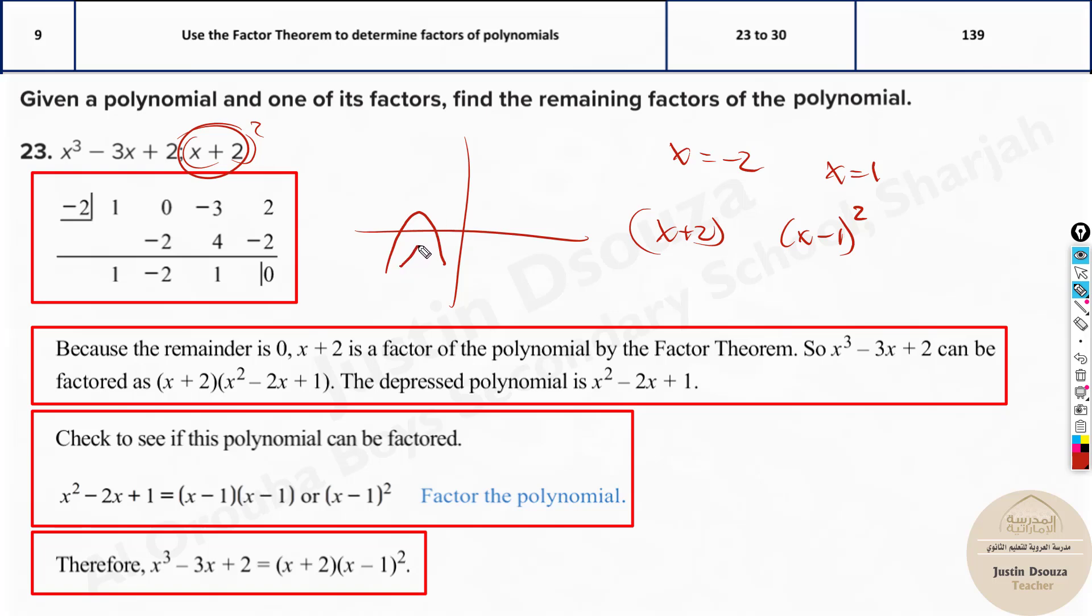Over here, it touches at x is equal to 1, it touches something like this and goes and continues. So basically, it has a multiplicity of 2. That's it.